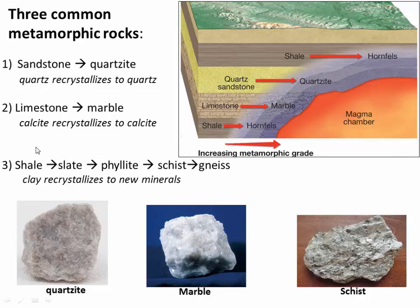The third example of metamorphic rocks is not one rock type but a progression. We might start with a shale, go to a slate, a phyllite, a schist, and ultimately a gneiss. When you metamorphose shale, the clay particles that make it up are not stable at high temperature and pressure and actually recrystallize to form new minerals. For example, as a shale metamorphoses into a schist, we'll start to grow garnet crystals, which can be seen here in this hand sample of schist.